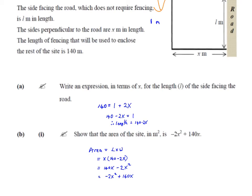Now part (b) tells us to show that the area of the site in m² is -2x² + 140x. This time we're talking about area, so I write down the formula as an equation: area equals length by width. The length is 140 minus 2x and the width is x. If we multiply them out, we get 140x minus 2x². If we reorder them, we get exactly -2x² + 140x. So we've shown that the area equals this.